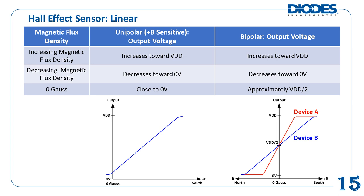Linear Hall Effect sensors come in unipolar and bipolar varieties. Unipolar linear Hall Effect sensors only respond to one polarity of magnetic flux density, usually positive flux density corresponding to a magnet's south pole. Bipolar linear Hall Effect sensors respond to both south and north poles. For both types, detecting an increasing magnetic flux density will increase the output voltage toward VDD, and detecting a decreasing magnetic flux density will decrease the output voltage toward zero volts. A key difference is the output voltage when no magnetic flux density is sensed: for unipolar linear devices, zero Gauss corresponds to a low but non-zero output voltage, whereas for bipolar linear devices, zero Gauss corresponds to an output voltage close to half of VDD.